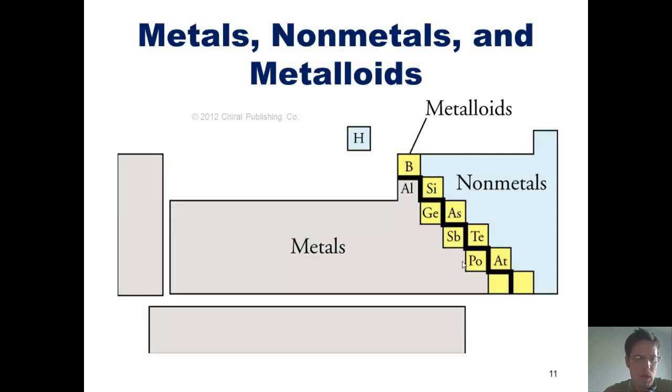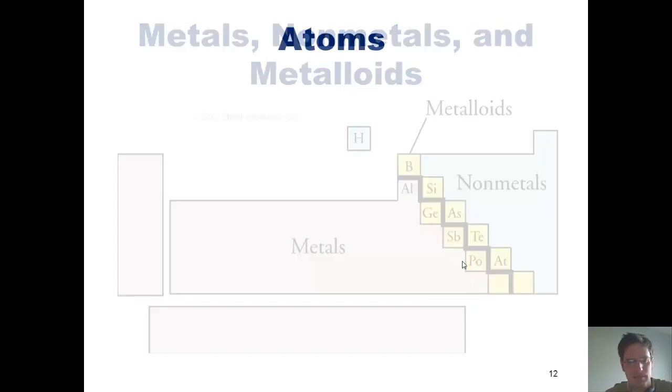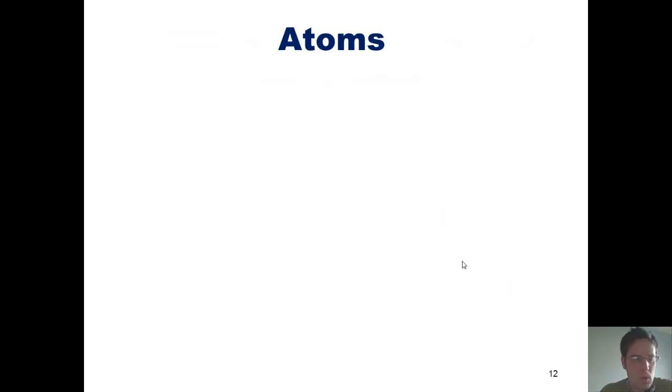The elements who straddle the line between nonmetals and metals are called metalloids. They're highlighted in yellow here. Metalloids have some of the properties that metals have and some of the properties that nonmetals have. Hence, they kind of straddle the intermediary line between the two different families of elements. I now wish to teach you more about atoms.